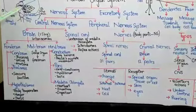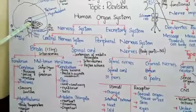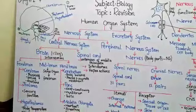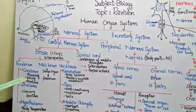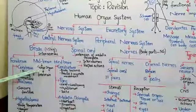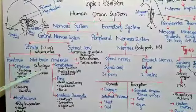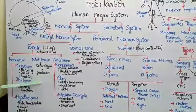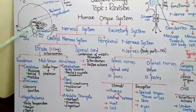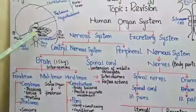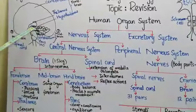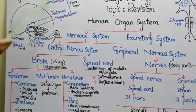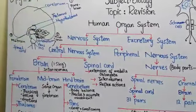Next is the midbrain. As you can see, the midbrain is present in the center, between the forebrain and hindbrain. It receives sensory information from the sense organs and passes it to the appropriate part of the forebrain — whether to the cerebrum, thalamus, or hypothalamus.